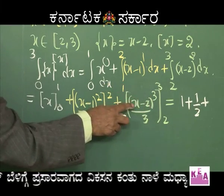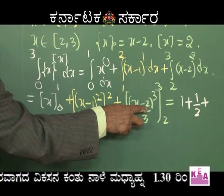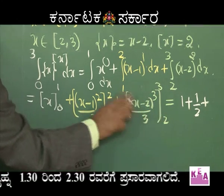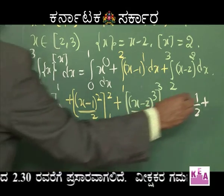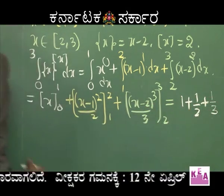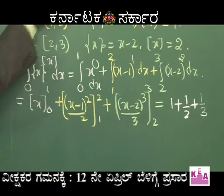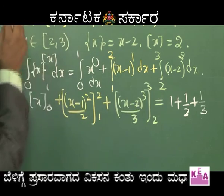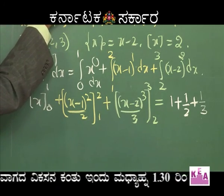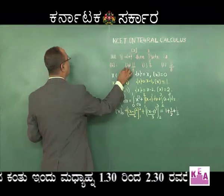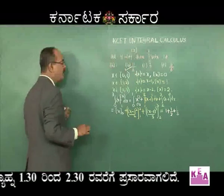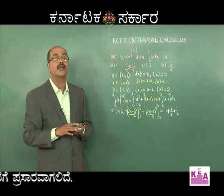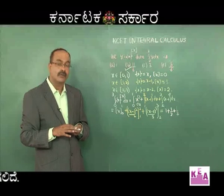Adding everything up: 1 + 1/2 + 1/3 = 11/6. Therefore option B is correct. This is a very simple problem once you know the definitions of fractional part and integral part of x.